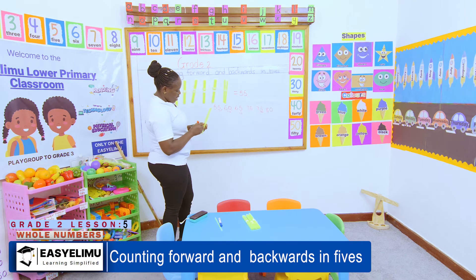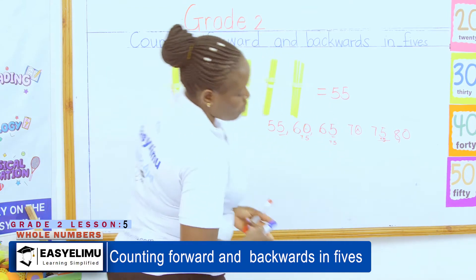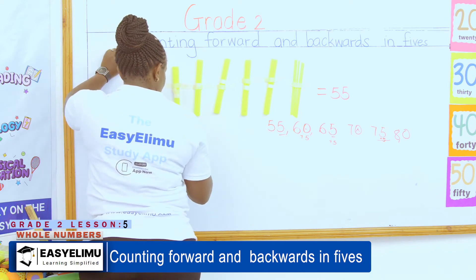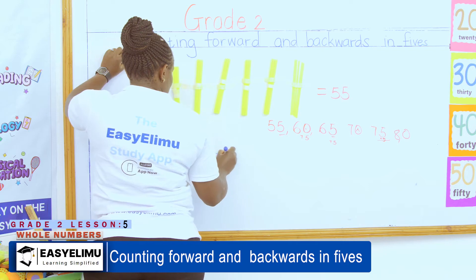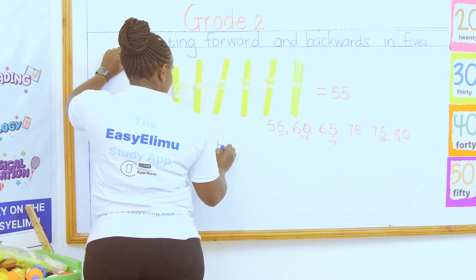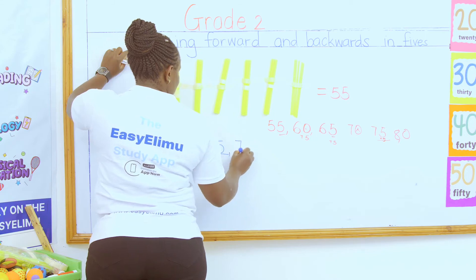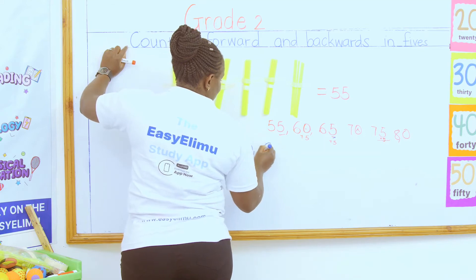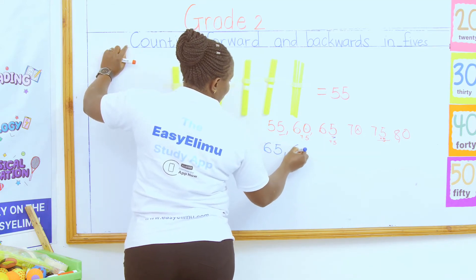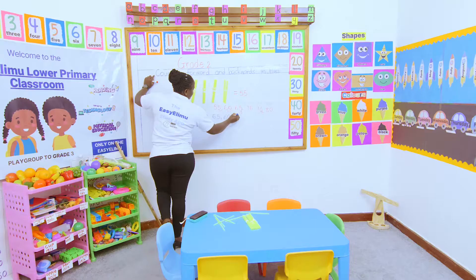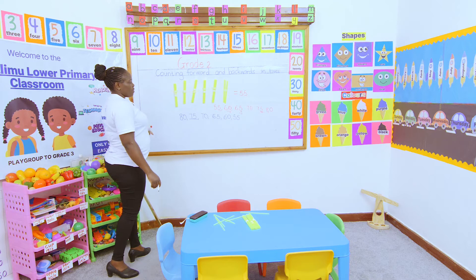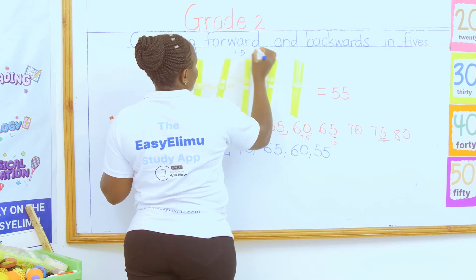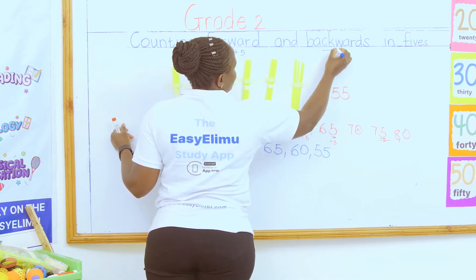Now, what if you're supposed to count backwards? What if you have been told to count backward? So we are saying from 80, we go backward. Which one is the next number? We are reducing — 75. When you reduce it will be 70. After 70 we have 65. After 65 we have 60, then 55. So what does it mean to count forward in fives? It means plus five. And backward means take away five.